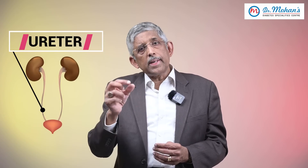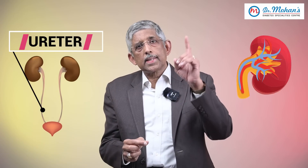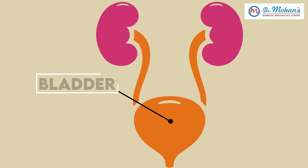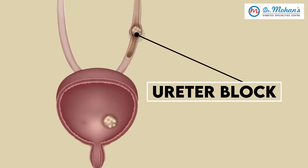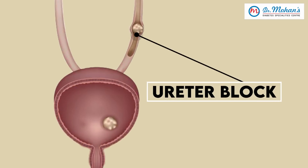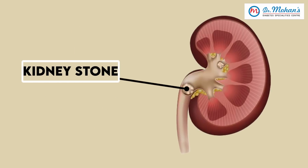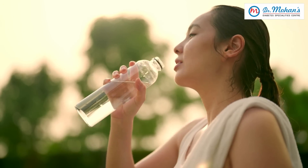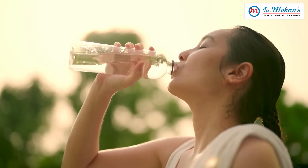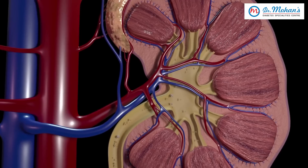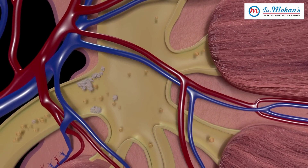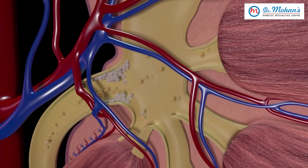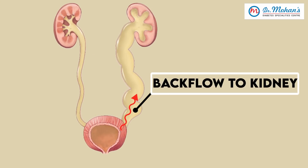Let's talk about the ureter. The ureter is a long tube which connects the kidney to the bladder. The ureter is important because you can get blocks in the ureter, strictures in the ureter, and more commonly you can get stones. If you have a kidney stone, sometimes if you drink a lot of water that stone can get washed off, especially if it is small — it can come out in your urine itself. But if the stone is big and gets lodged and stuck in the ureter, the urine flow can get affected.